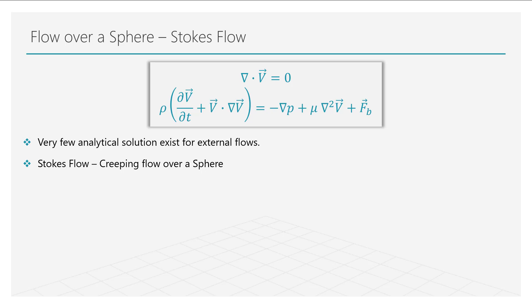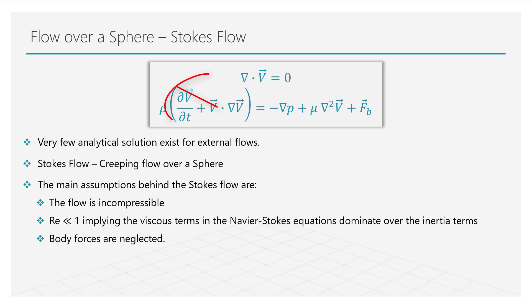A Stokes flow or a creeping flow is referred to the situation where the flow is incompressible, the Reynolds number is less than 1 and the body forces can be neglected. Under the assumptions of creeping flow, the velocity terms contained in the incompressible momentum equation can be ignored. As a result, we obtain a new set of equations that describe a creeping flow around a sphere.